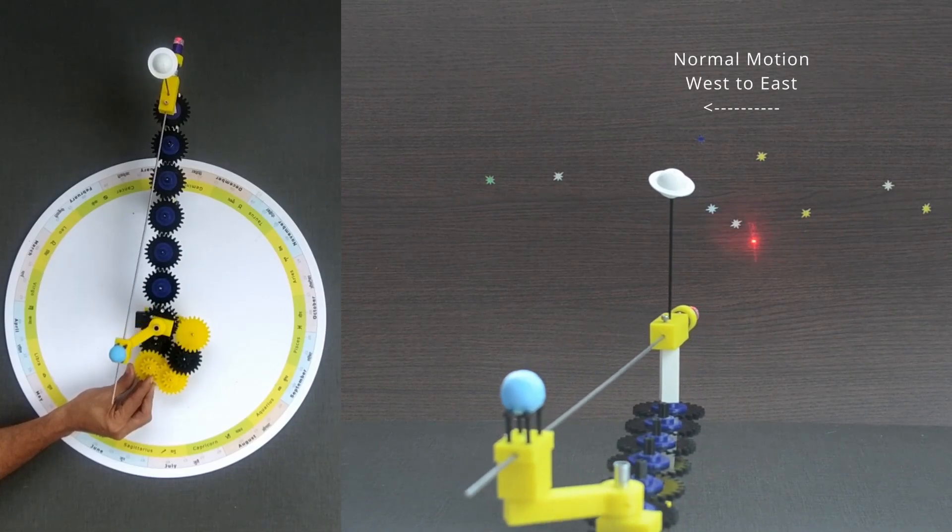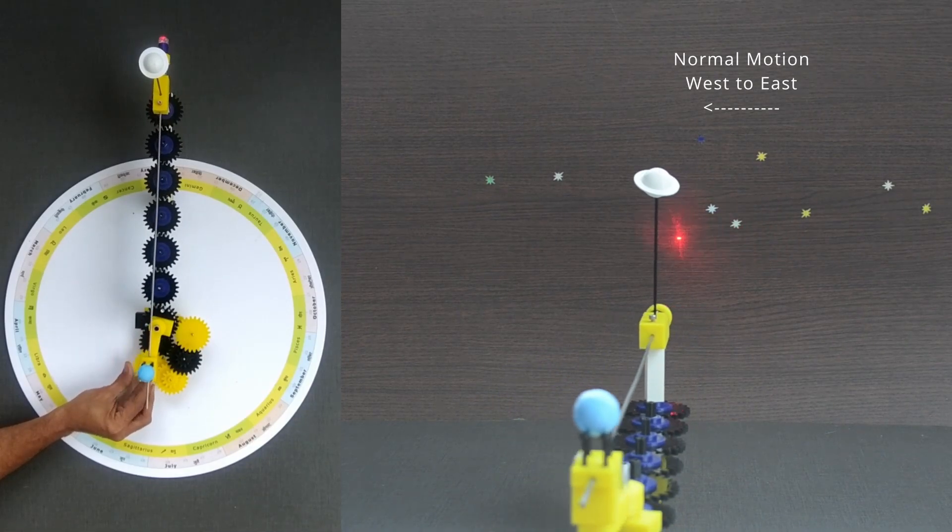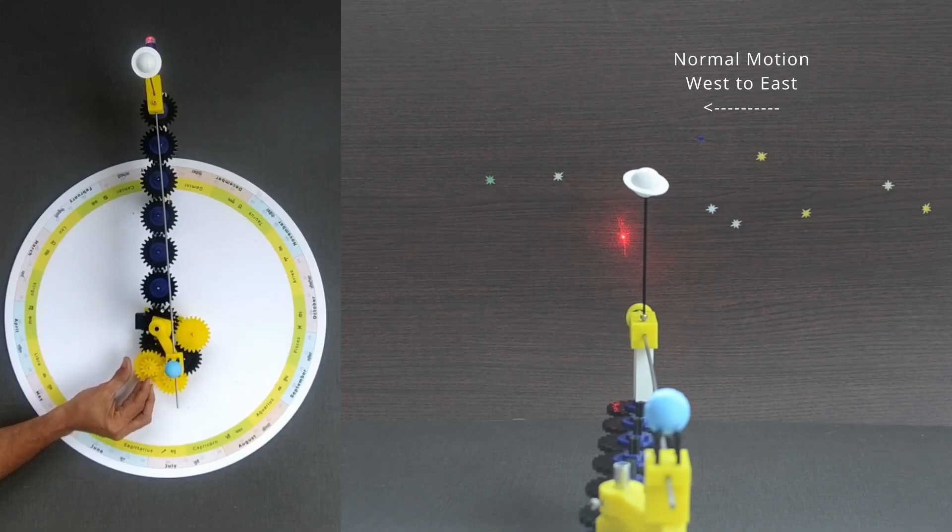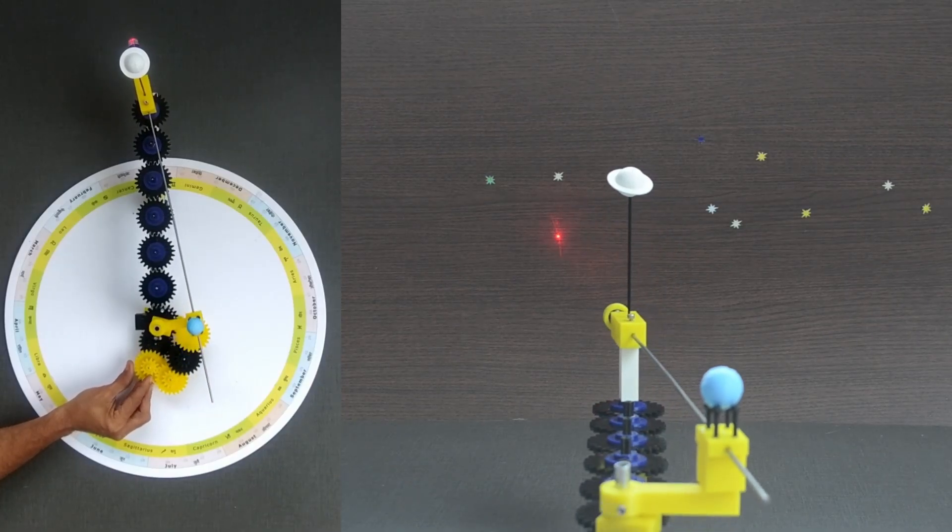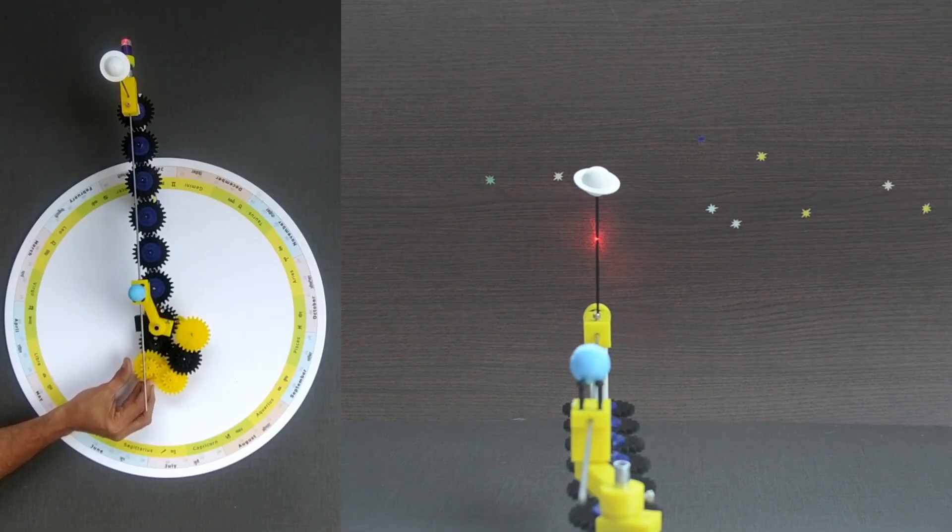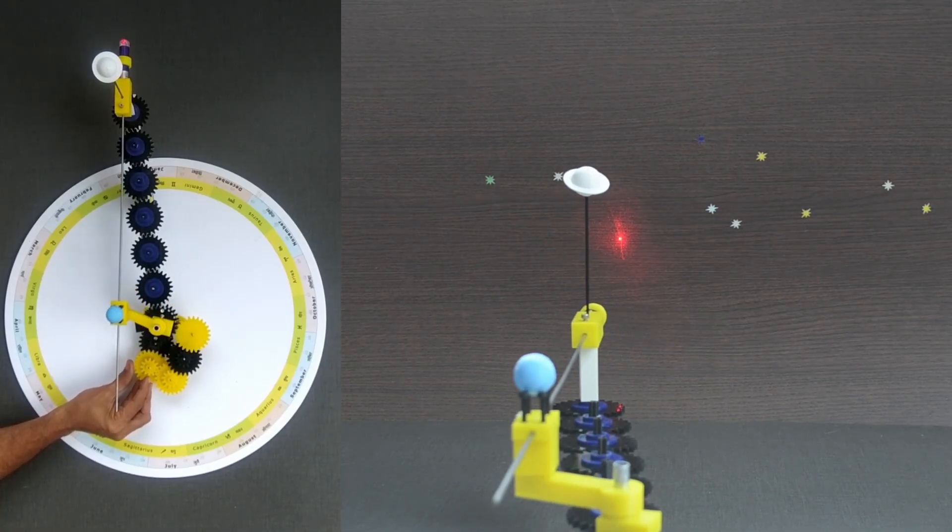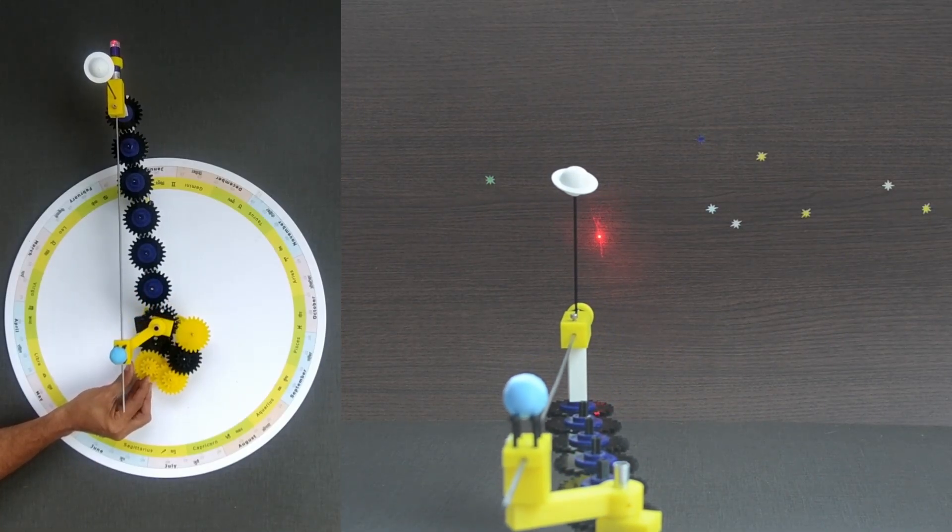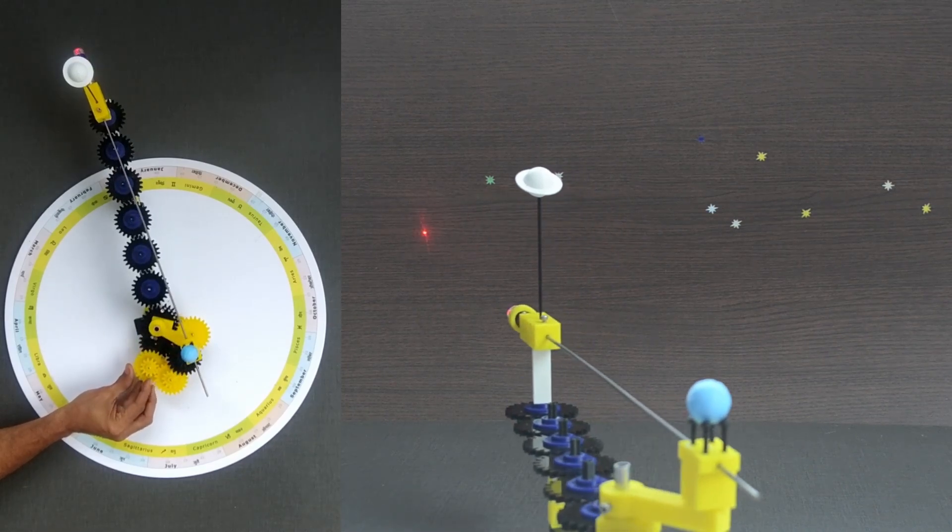This happens due to the difference in relative speed of Earth and Saturn. Retrograde motion takes place with an interval of 378 days, and this retrograde motion lasts for approximately 137 days.